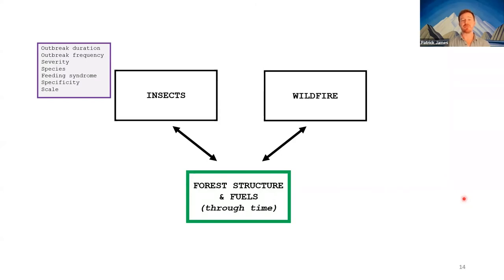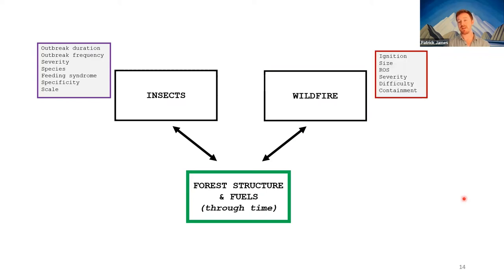There's additional complexity in this triangle of interactions. When we talk about insects, what is it about them that we expect to influence forest structure and fuels? Forest insect outbreaks vary among species and location — outbreak duration, frequency, severity, the species on which they're feeding, the feeding syndrome (e.g., mountain pine beetle as a cortical feeder versus spruce budworm as a defoliator), degree of specificity, and spatial scale. Likewise, if you're asking how fuels influence wildfire, you're talking about ignition, size, rate of spread, severity, and difficulty of containment.